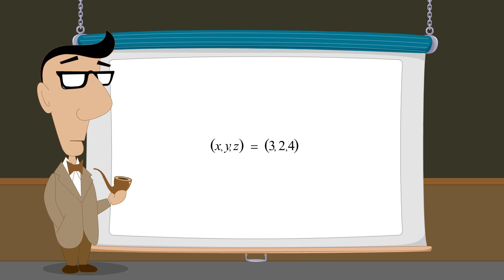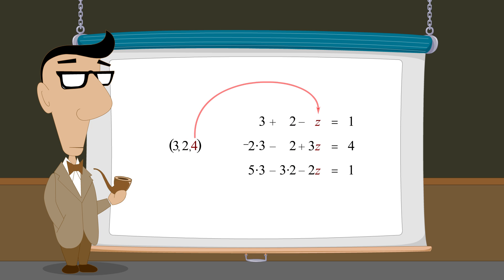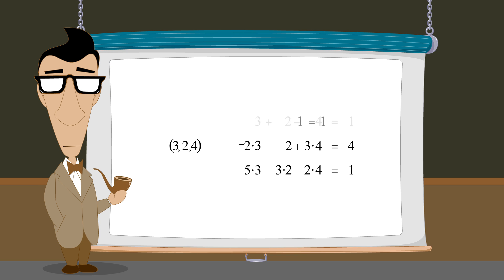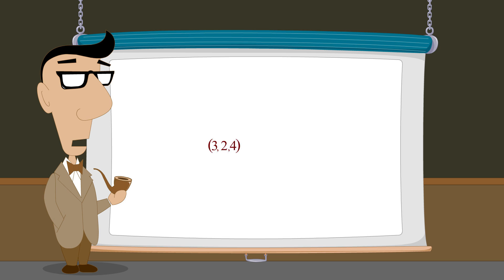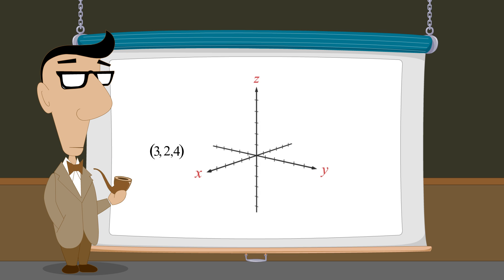If we substitute these values for x, y, and z into the three original equations, we will find that these values are a common solution to all three equations. This confirms that our answer is correct. Even though we have not graphed the three planes representing the three linear equations in this system, we know that all three planes intersect at the point whose x, y, and z coordinates are the ordered triple three, two, four.